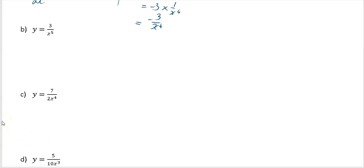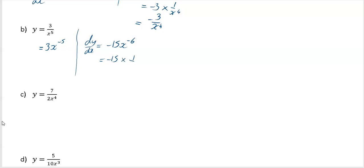Next example: the same approach — rewrite the expression in index form, so it's three times x to the minus five. Now differentiate: dy/dx, the minus five multiplies to give minus 15, and the power reduces by one to x to the minus six. Showing the steps: minus 15 times x to the minus six, where x to the minus six is one over x to the six, so the answer is minus 15 over x to the power of six.